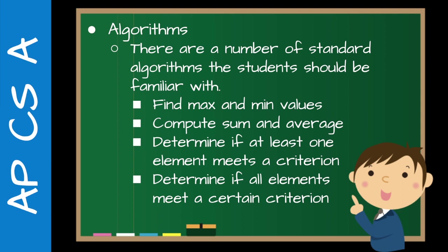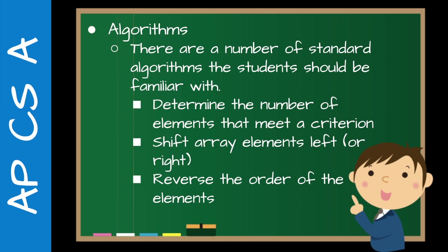There are a number of standard algorithms students should be familiar with that might come up on the AP exam in multiple choice or free response. Students should be comfortable finding maximum and minimum values from an array, computing sums and averages, determining if at least one element meets a certain criteria — for example, is there at least one senior in a group of students? — determining if all elements meet a criteria — are they all seniors? — and counting: determining the number of elements that meet a criteria, such as how many students are seniors, juniors, or sophomores.